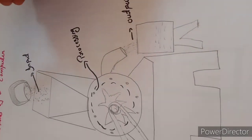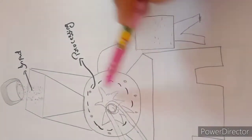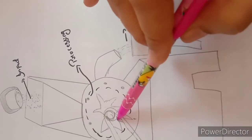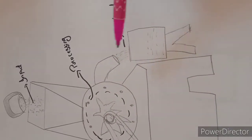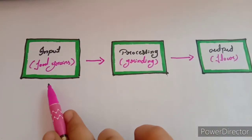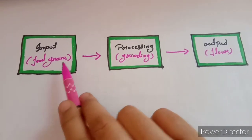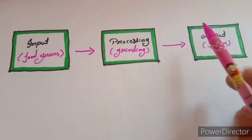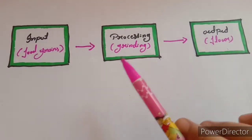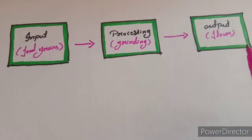Food grains put into the big funnel — this function is input. The grains are slowly crushed — this is processing. The flour comes out of the opening at the bottom — this process is output. The action of grinding the food grains into flour is processing, and the flour coming out of the opening is output.